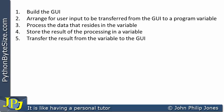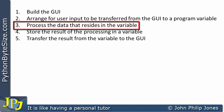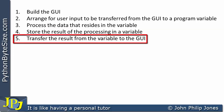When building a program that uses a graphical user interface, I recommend the following steps, which I followed for the program in this video. Step 1: build the graphical user interface. Step 2: arrange for user input to be transferred from the GUI to a program variable. Step 3: process the data in the variable. Step 4: store the results of the processing in a variable. Step 5: transfer the results from the variable to the graphical user interface.